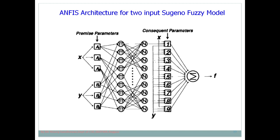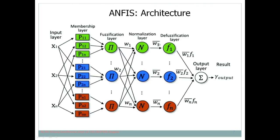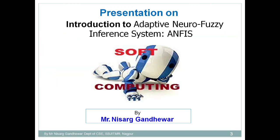Another representation of ANFIS architecture is shown for the two-input Sugeno model, where x and y inputs with fuzzy variables a1, a2, a3, b1, b2, b3 are used. The hidden layer performs the actual processing, and outputs for each rule are combined to get the final output. In conclusion, ANFIS combines neural networks and fuzzy logic — taking decision-making and knowledge representation from fuzzy logic and the back propagation learning process from neural networks — to minimize the difference between expected and actual output.